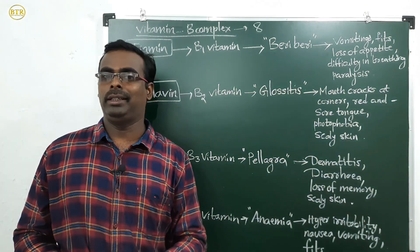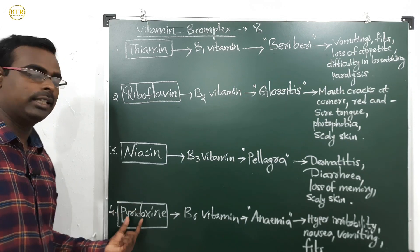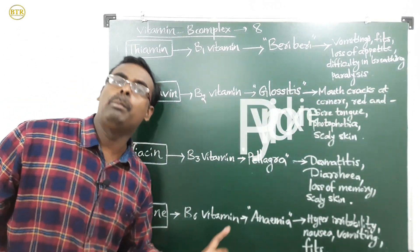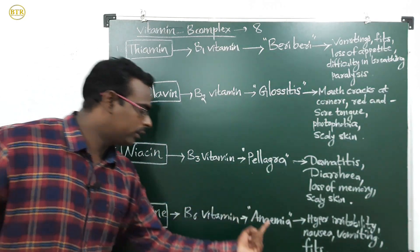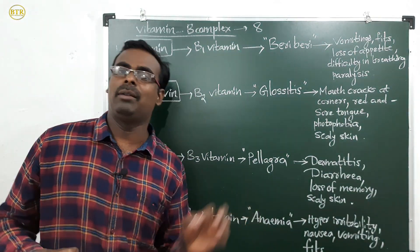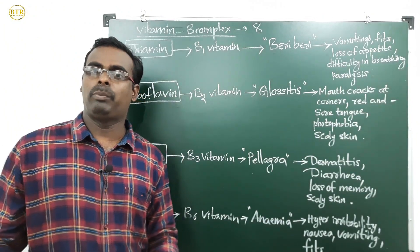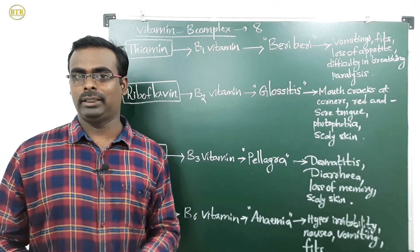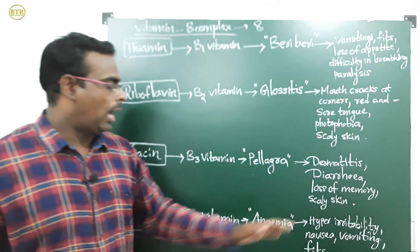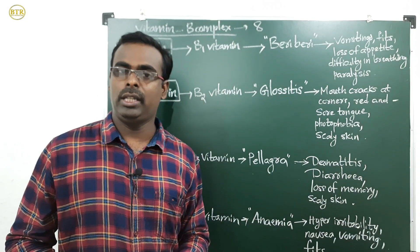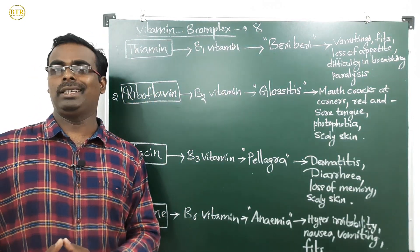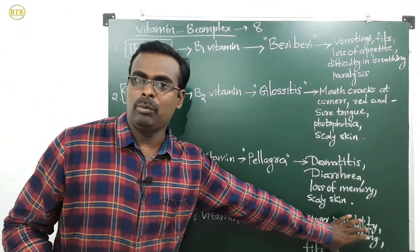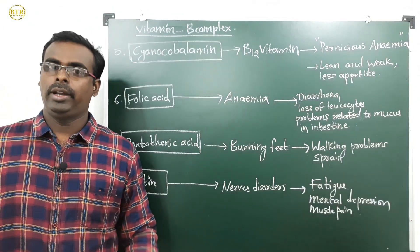The fourth B complex vitamin is pyridoxin, also called B6 vitamin. Deficiency of pyridoxin causes anemia — a blood loss disease. Symptoms of anemia from pyridoxin deficiency include hyper irritability, nausea (feeling of vomiting), vomiting, and fits.